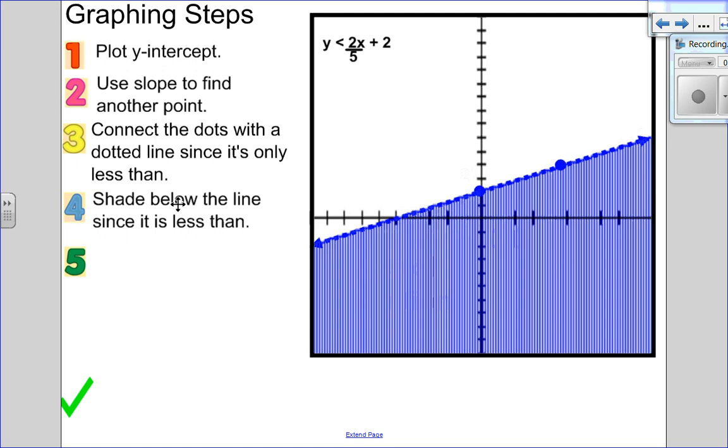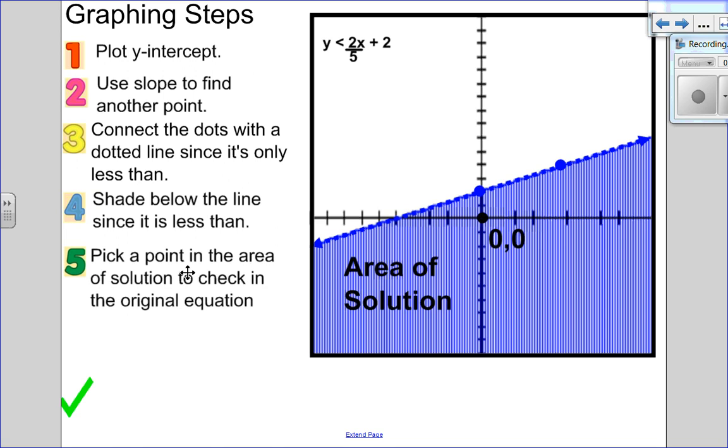Once you've done that, you just have to pick a point in the area of solution. I like these ones because I can pick the origin, 0, 0. That's my favorite point to pick because it's super easy to do the check because x and y are both 0. Put it all into the equation. Everything cancels out and I'm left with 0 greater than negative 10, which is true. So I know I did it correctly.